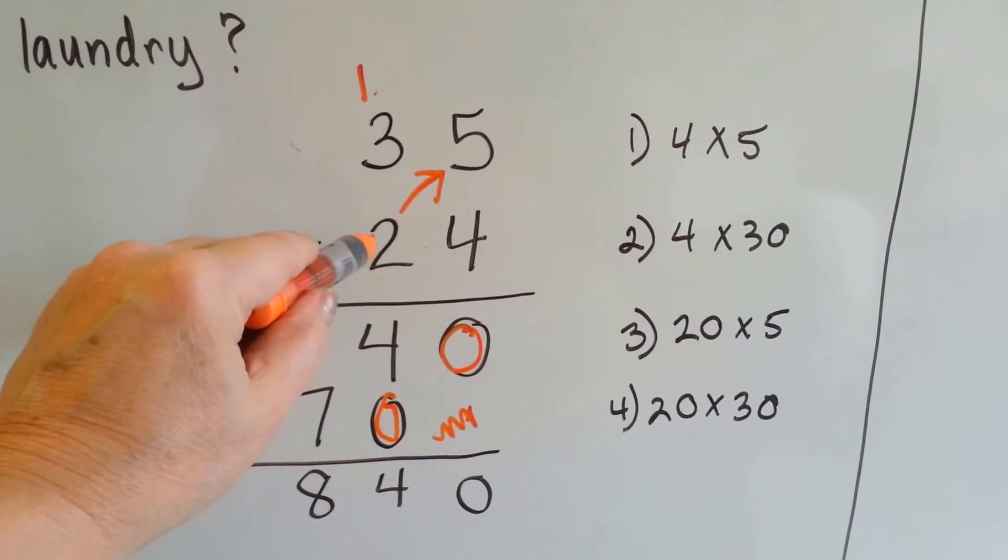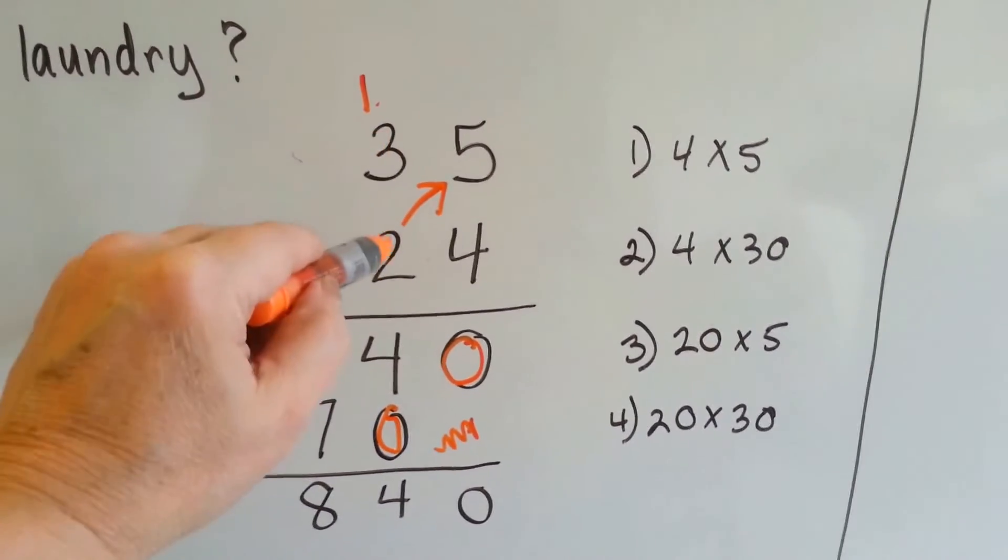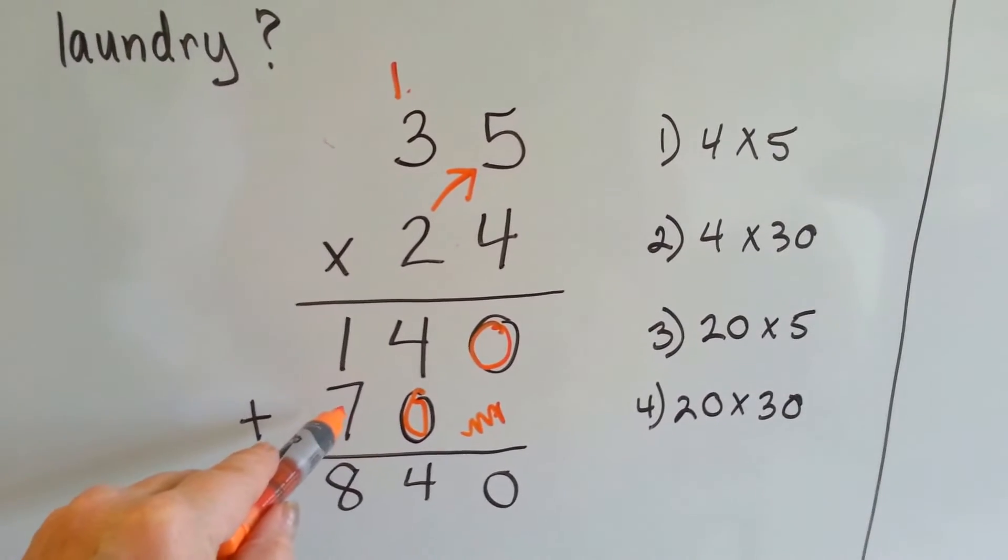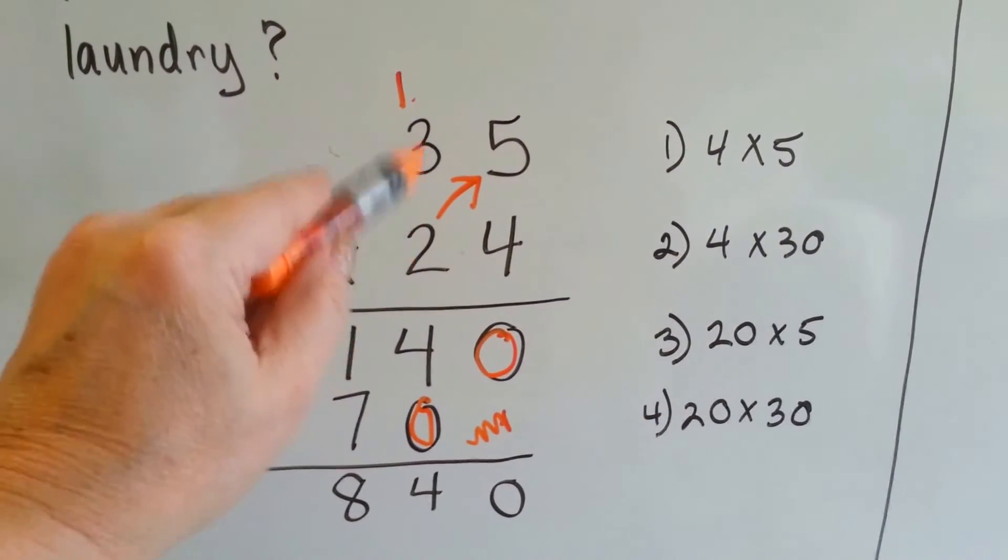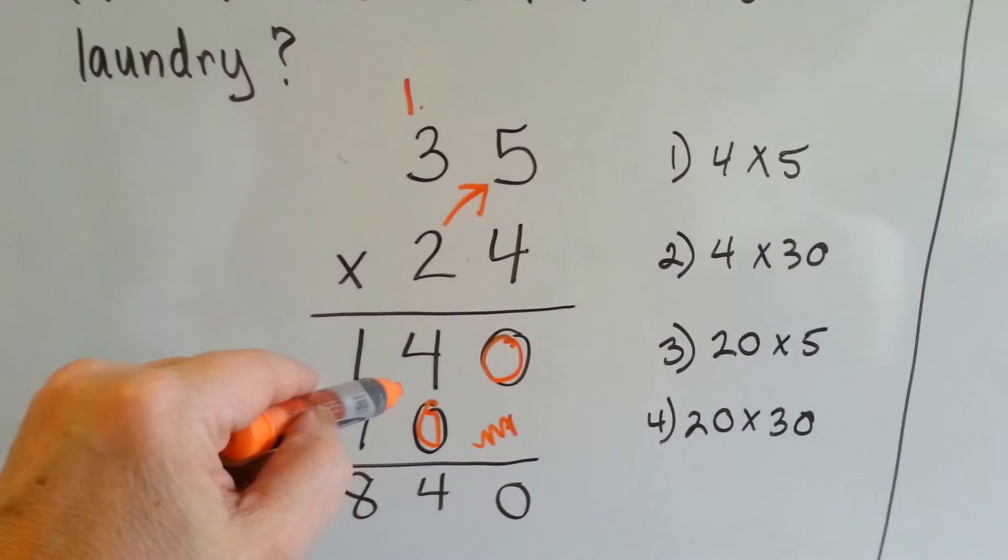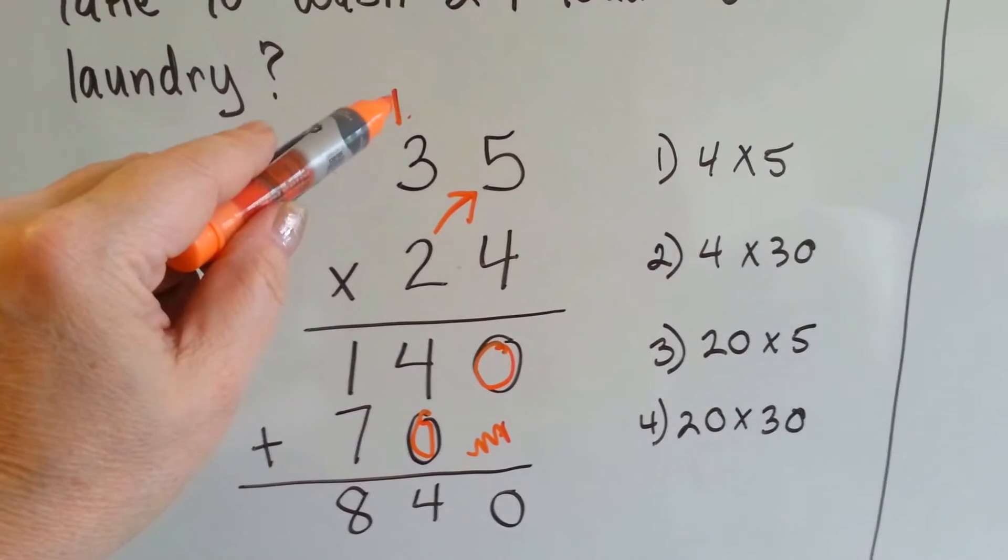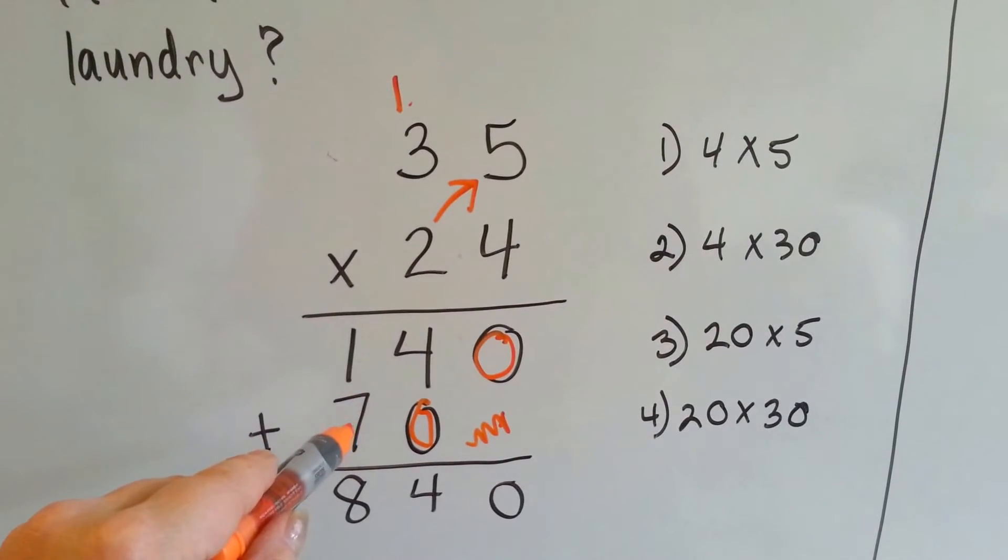Then we do 20 times 30, right here. We do the 2 times the 3 is 6 plus 1 is 7, and we put it here in the hundreds place. Because 20 times 30 is 600, and we've got 1 more, so it makes it 7.